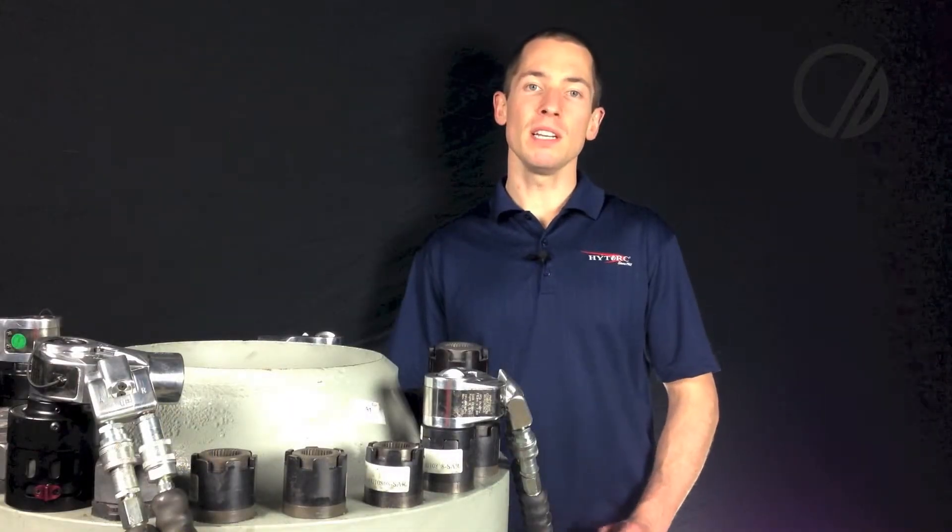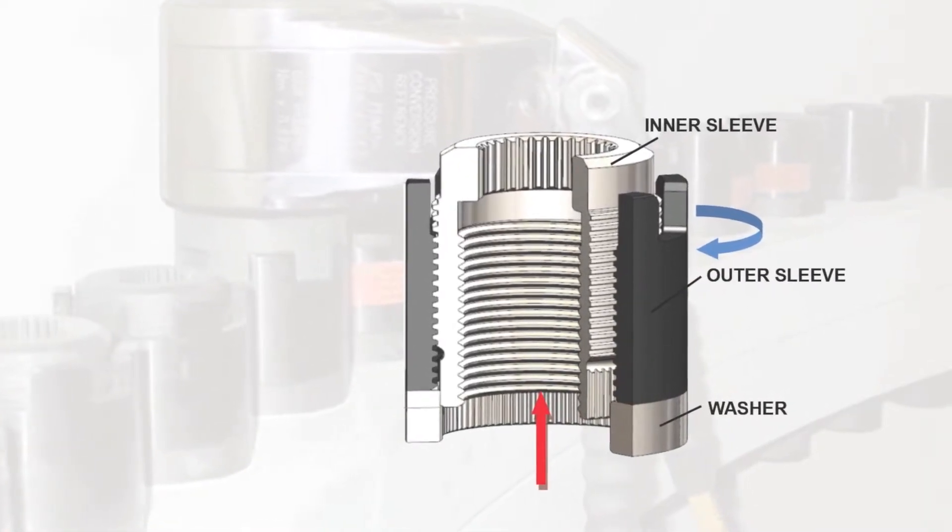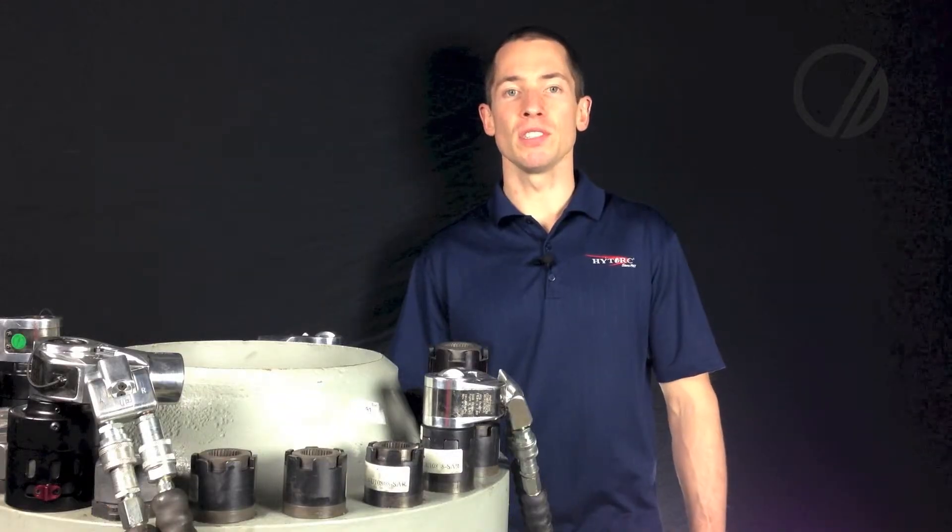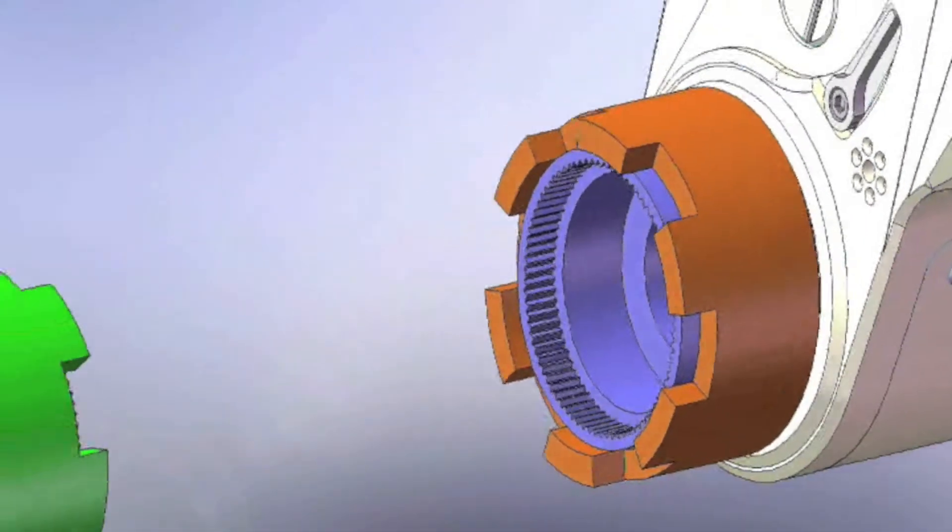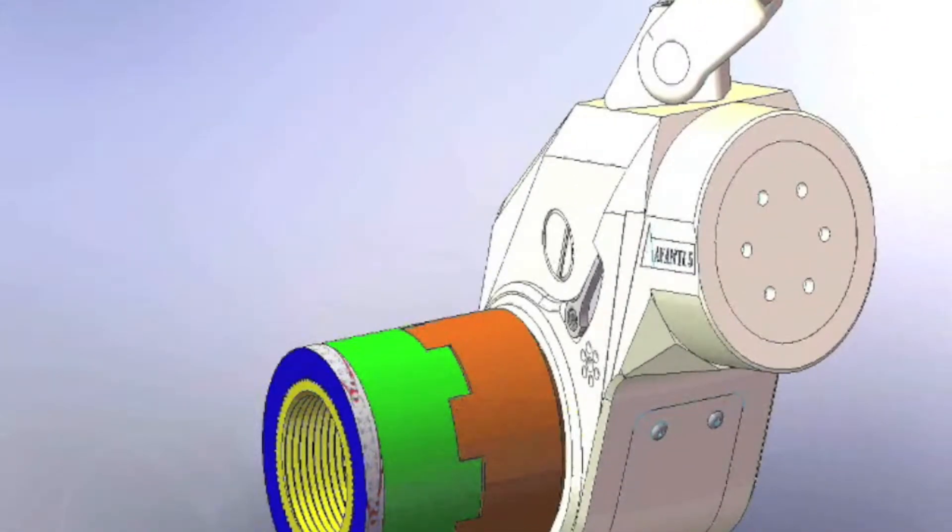The HITORQ nut is a complete nut replacement solution that achieves consistent torsion-free bolt load accuracy within 5%, higher than any other bolting system available today. This is achieved through controlling friction and other outside variables that can affect other bolting systems.